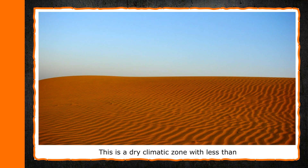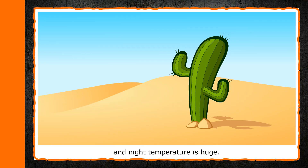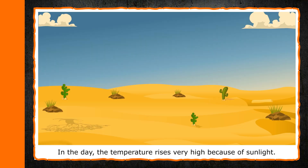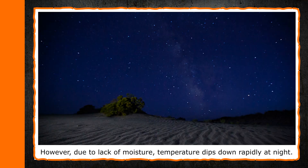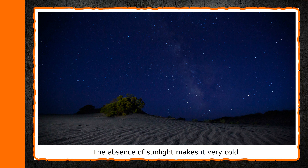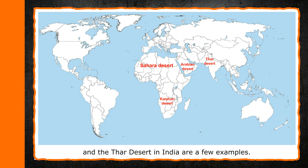Desert. This is a dry climatic zone with less than 10 inches of annual average rainfall. This area is not humid, and hence the variation between day and night temperature is huge. In the day, the temperature rises very high because of sunlight. However, due to lack of moisture, temperature dips down rapidly at night. The absence of sunlight makes it very cold. Hot deserts of Sahara and Kalahari are in Africa. The Arabian deserts of the Middle East and the Thar Desert in India are a few examples.